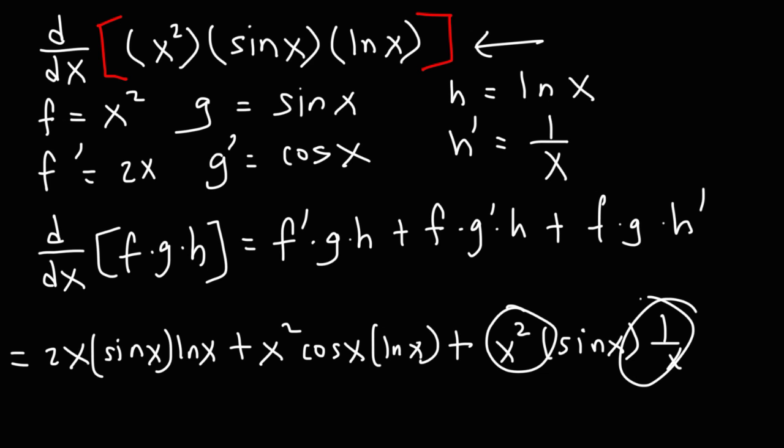x squared times 1 over x, which is x squared divided by x, that's simply x. So this term reduces to x sine x.